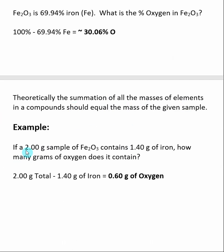We've already determined that in a 2 gram sample of Fe2O3, 1.40 grams is due to iron. We then can ask how many grams of oxygen does it contain. If we take the total mass, 2.0 grams, and subtract off the mass due to iron, 1.40 grams, we get the mass of oxygen contained in our original sample, 0.60 grams.